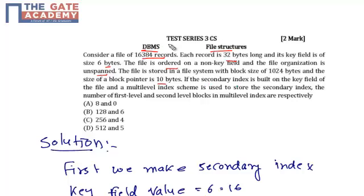If the secondary index is built on the key field of the file and a multilevel index scheme is used to store the secondary index, the number of first level and second level blocks in the multilevel index are respectively how much?